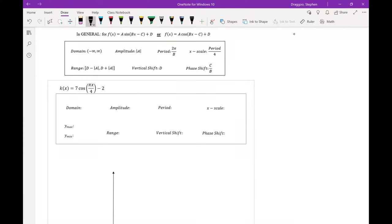Now coming to our graph. Our domain is still all real numbers. Our amplitude is 7. Period should be 2π divided by π over 4, which is 8. My x scale should be 8 over 4, which is 2.